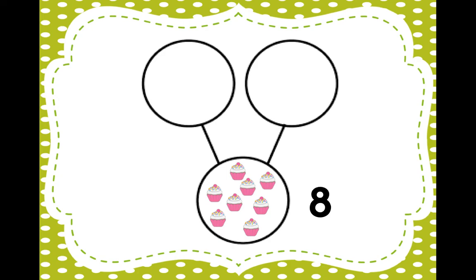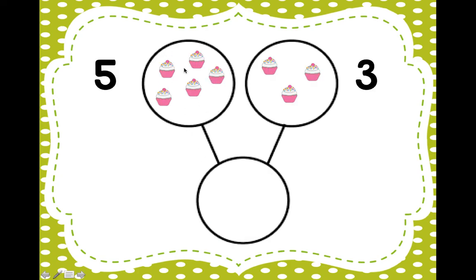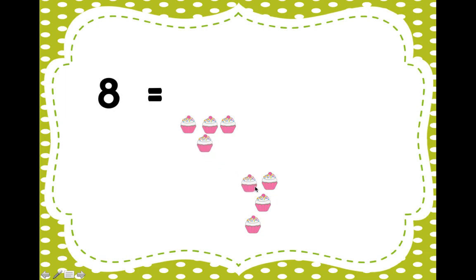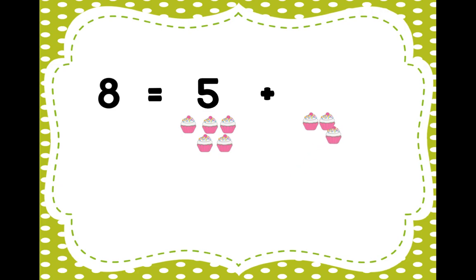Good. Now I'm going to put them back into their circles on the top. We had five over here and three over here. And what number did they make? Eight all together. Good job. So when I put that in an equation, the eight cupcakes equals — we had one, two, three, four, five, plus one, two, three cupcakes. And that makes eight. So eight is equal to five plus three.